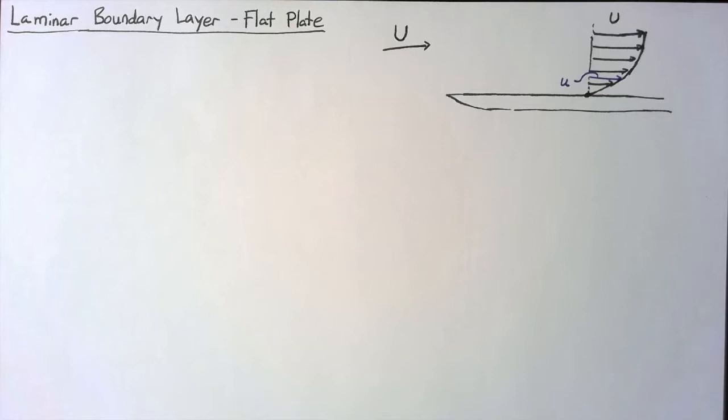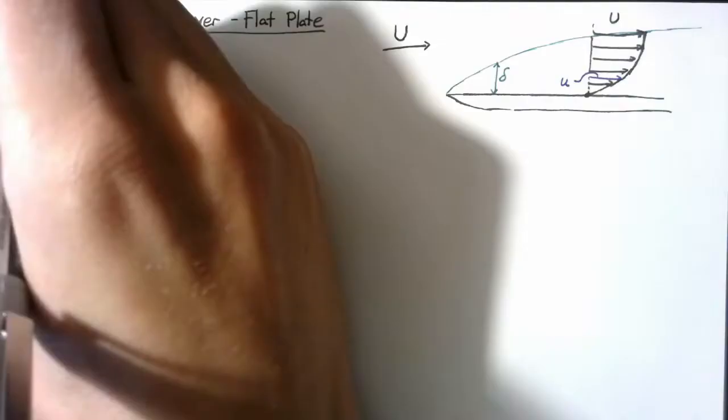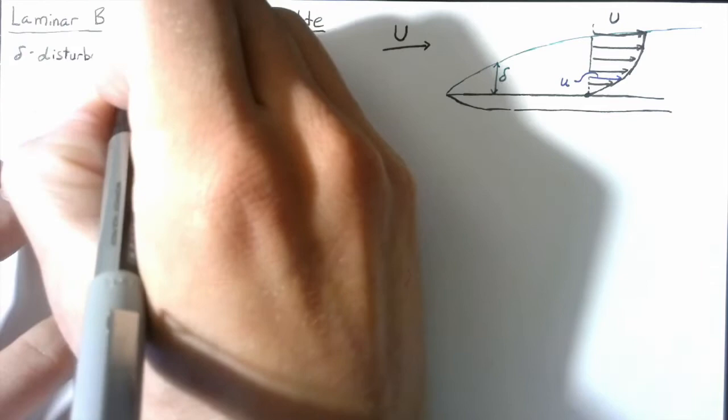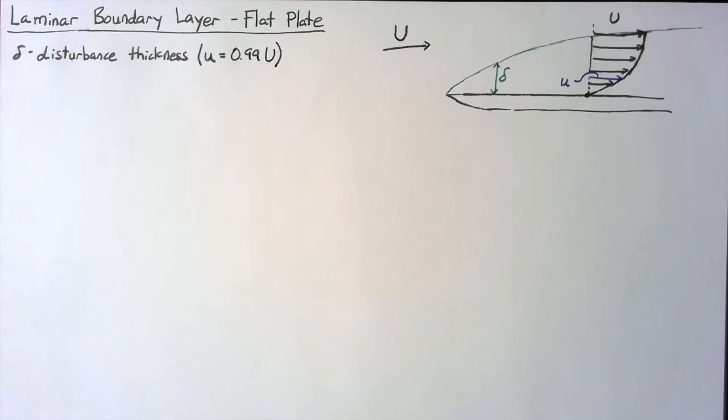The first of these is known as the displacement thickness. The symbol that we use for it is a lowercase delta. It is defined as the height at which the local velocity is equal to 99% of the far field velocity. And as I've drawn, that distance changes with x.